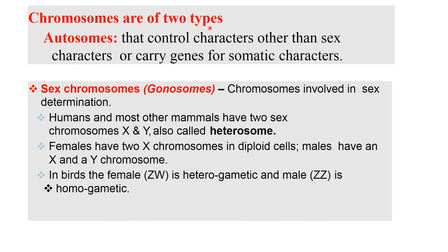Chromosomes are of two types. Autosomes control characters other than sex characters, or carry genes for somatic characters. Sex chromosomes, also called gonosomes, are chromosomes involved in sex determination.